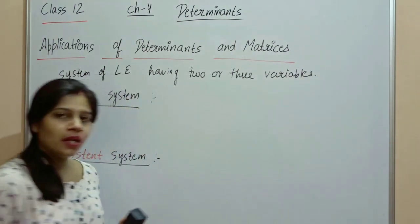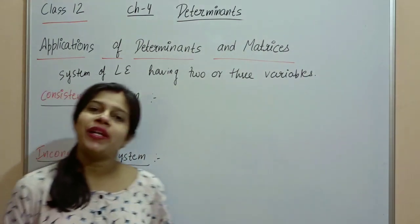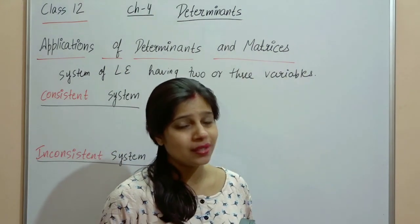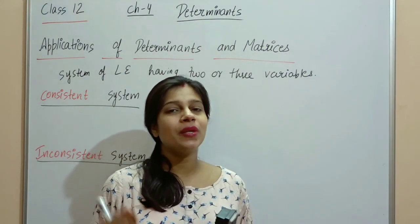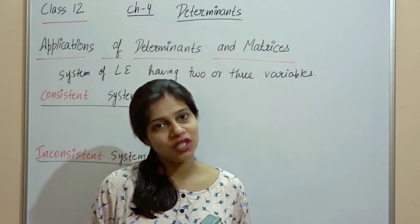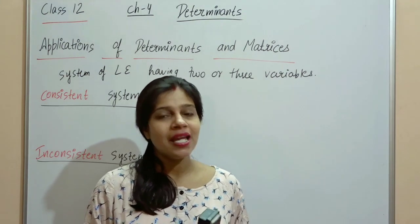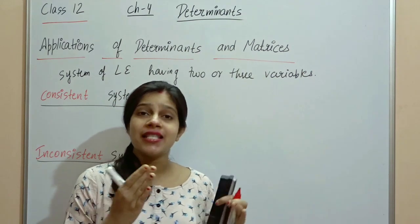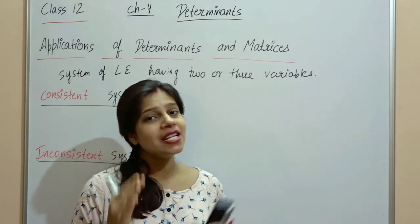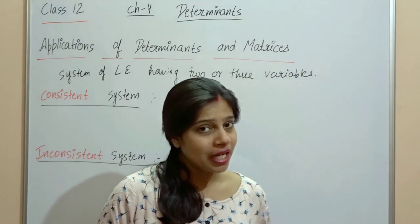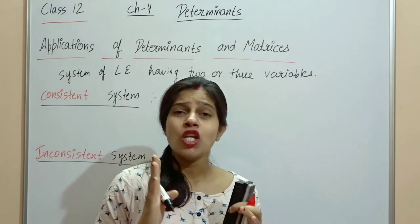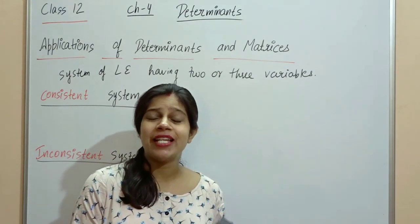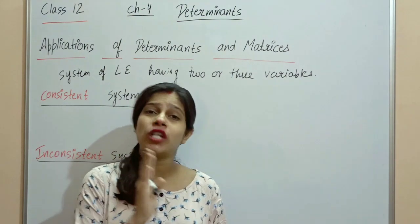If we have two variables, how many equations do we need? Two equations. If we have three variables, how many equations do we need? Three equations. But first of all, we need to know the consistent system and inconsistent system.